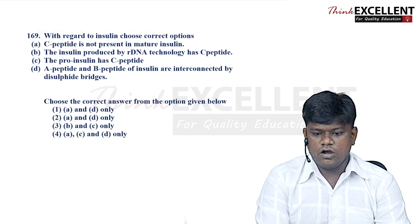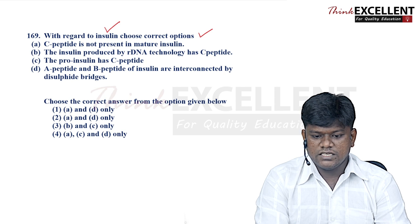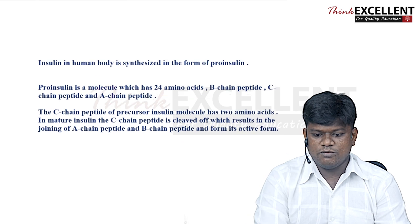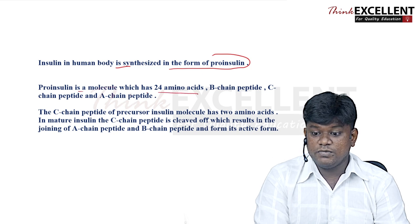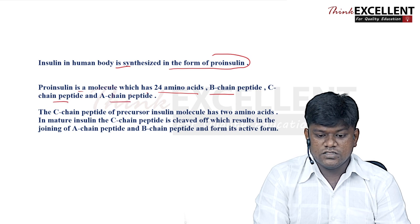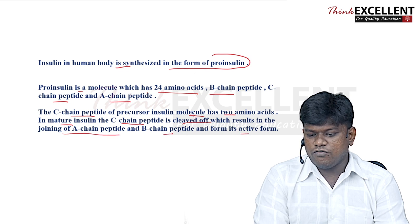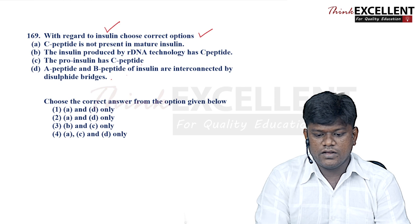Question 169: regarding insulin — C-peptide is not present in mature insulin; insulin produced by rDNA technology has no C-peptide; proinsulin has C-peptide; and A and B peptides of insulin are interconnected by disulfide bridges. In the human body, insulin is synthesized as proinsulin (with A, B, and C chains). The C-peptide is cleaved to produce active insulin. So option 4 — statements A, C, and D are correct — is the right answer.